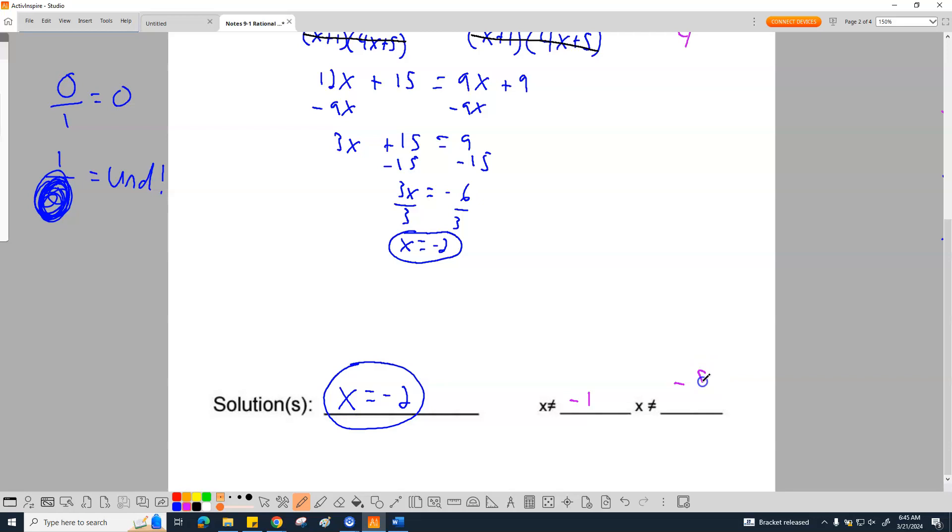That's that, negative 5 over 4. That's the main lecture. That's the first example. If you can do this problem and you understand what's going on, then you basically are good to go in this unit. But I'm going to work the rest of the notes too.